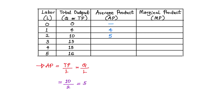When the total level of output is 13 and the amount of labor used is 3, we say 13 divided by 3 — that gives us 4.33. So the average level of output per worker is 4.33. When the total product is 15 and the level of labor is 4, that is 15 divided by 4, which is 3.75. And when the level of quantity is 16 and the amount of labor used is 5, the average product per worker is 16 divided by 5, which is 3.2.